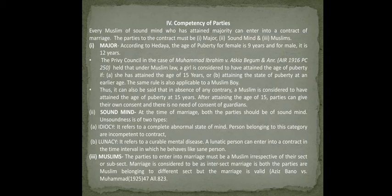The second competency requirement is sound mind. At the time of marriage, both parties must be of sound mind. If a party is not of sound mind at the time of contracting marriage, the marriage will be void. Unsoundness of mind is of two types: idiocy and lunacy.